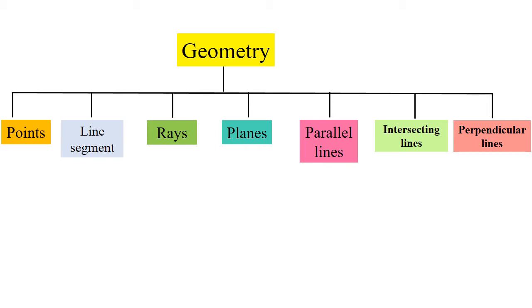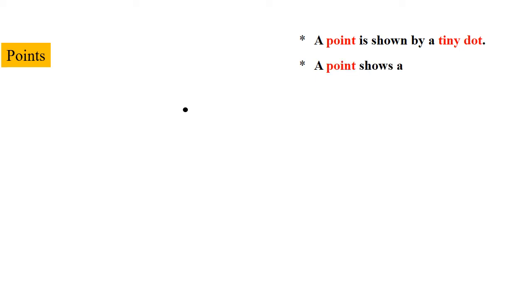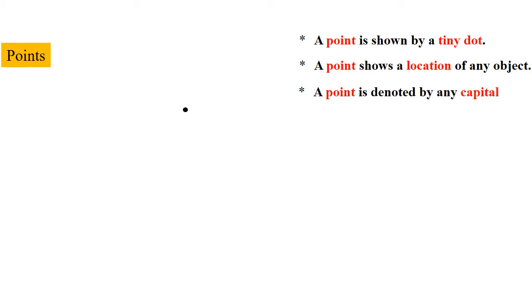Let's start with the first figure, that is point. If we make a dot on this white page with the help of a pencil, this tiny dot is called a point. A point is shown by a tiny dot and it shows an exact location of any object. A point is denoted by any capital letter of the English alphabet. Let's denote this point as capital P — it can be read as point P.